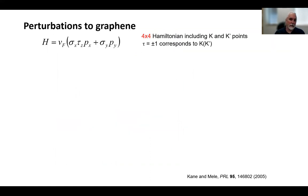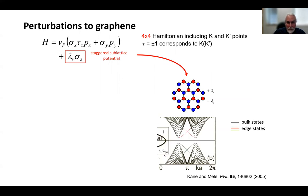So when graphene was quite new experimentally, theorists, Charlie Kane and Gene Mele, looked at the perturbations possible in graphene. And they found that if you have a potential that's different on the two atoms in the unit cell, this will open a band gap in graphene. And they also found that spin orbit coupling will open a band gap in graphene. But these two band gaps are in some sense different.